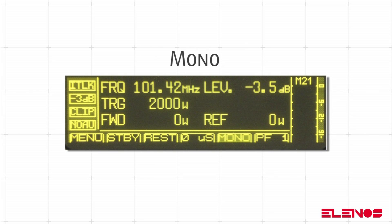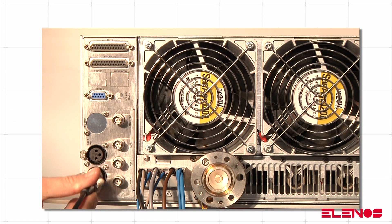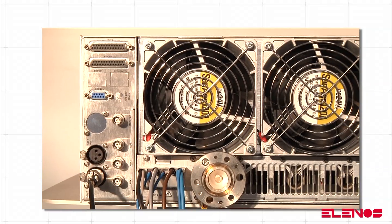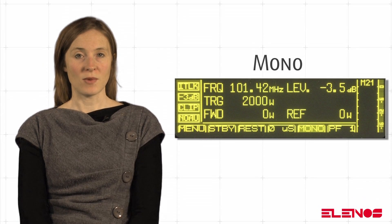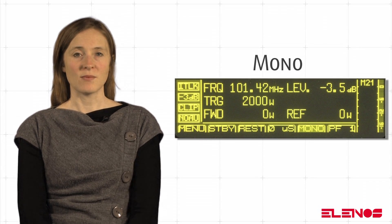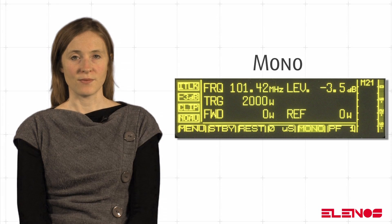Mono: apply the mono signal to the XLR right connector on the rear panel. The signal can be balanced or unbalanced. In the latter case, there is a 3 decibel level reduction.